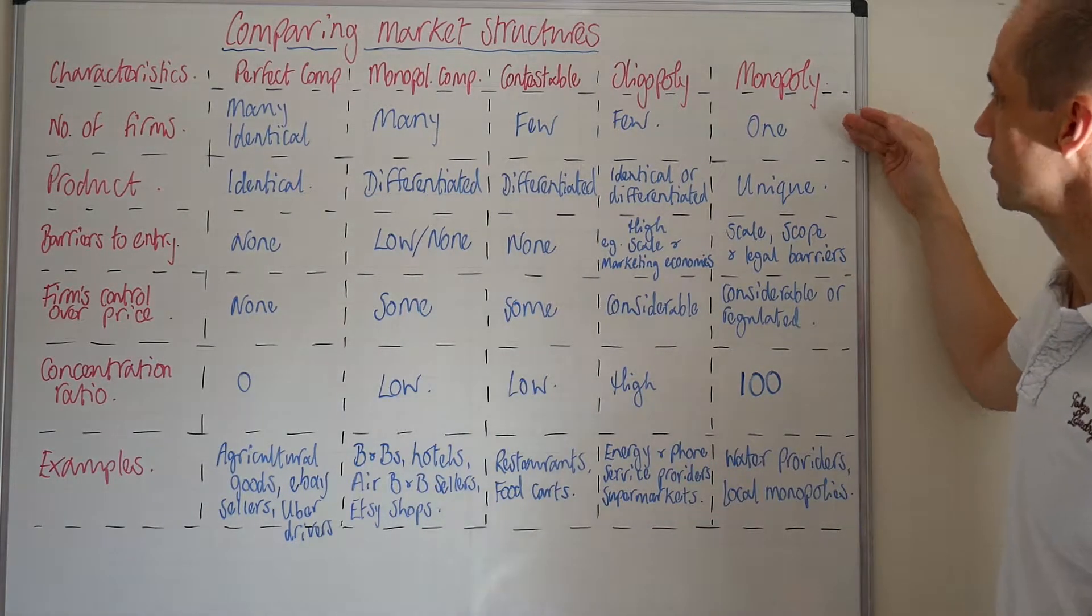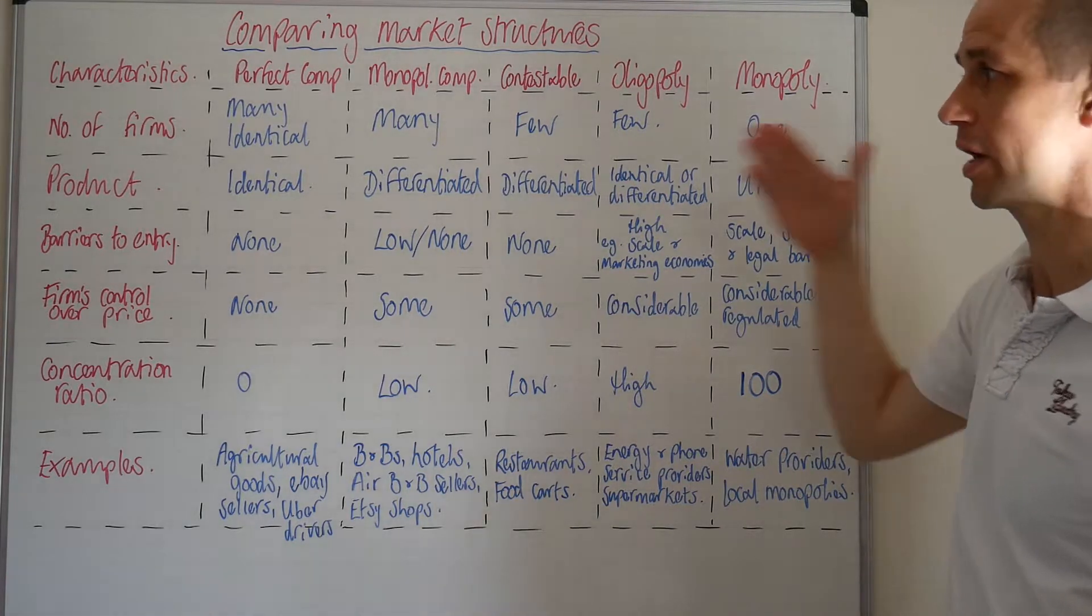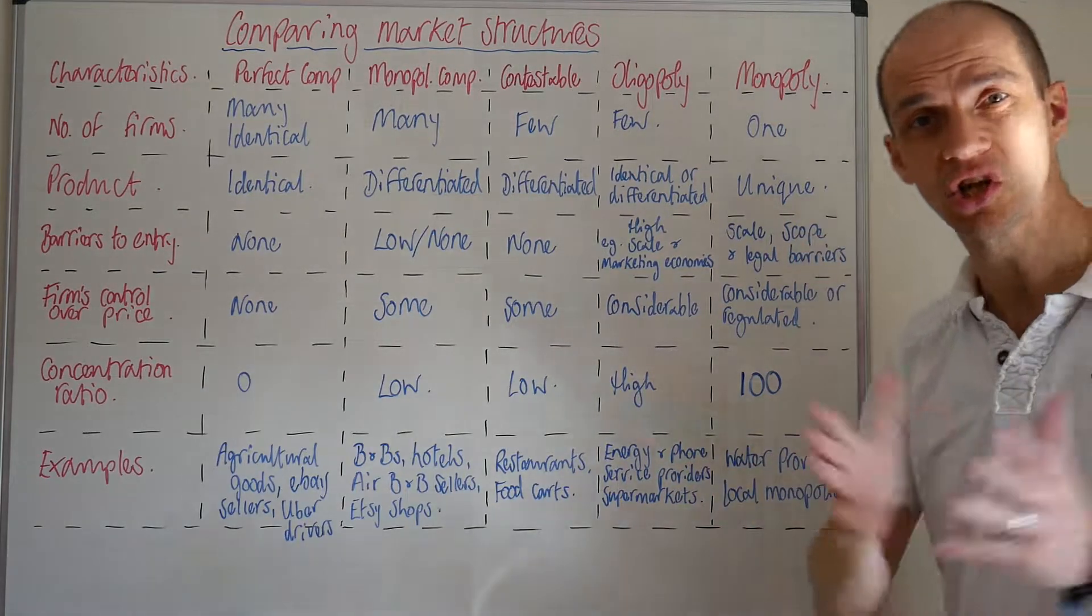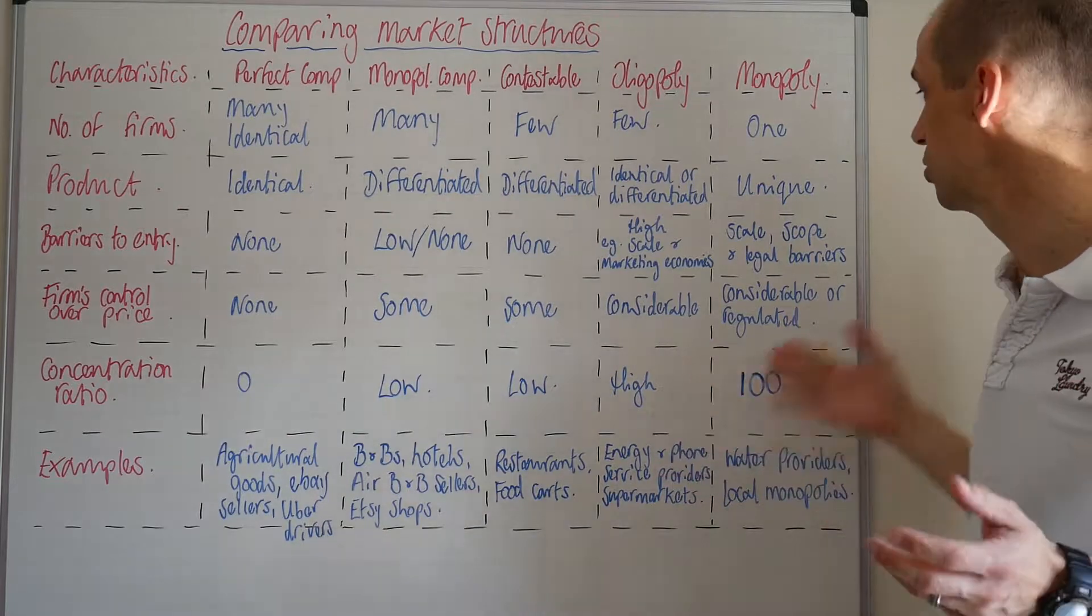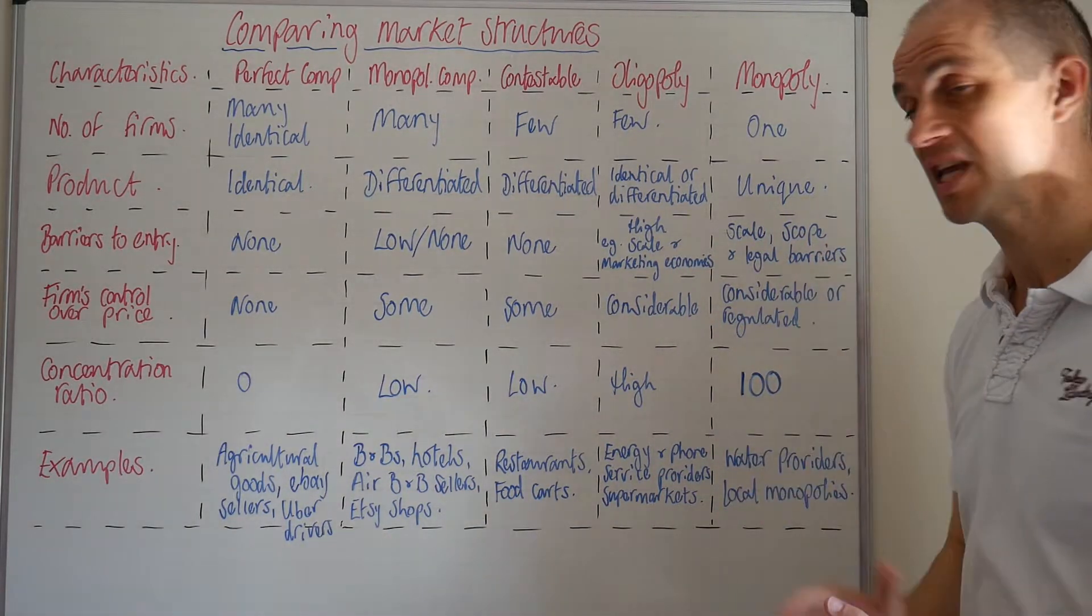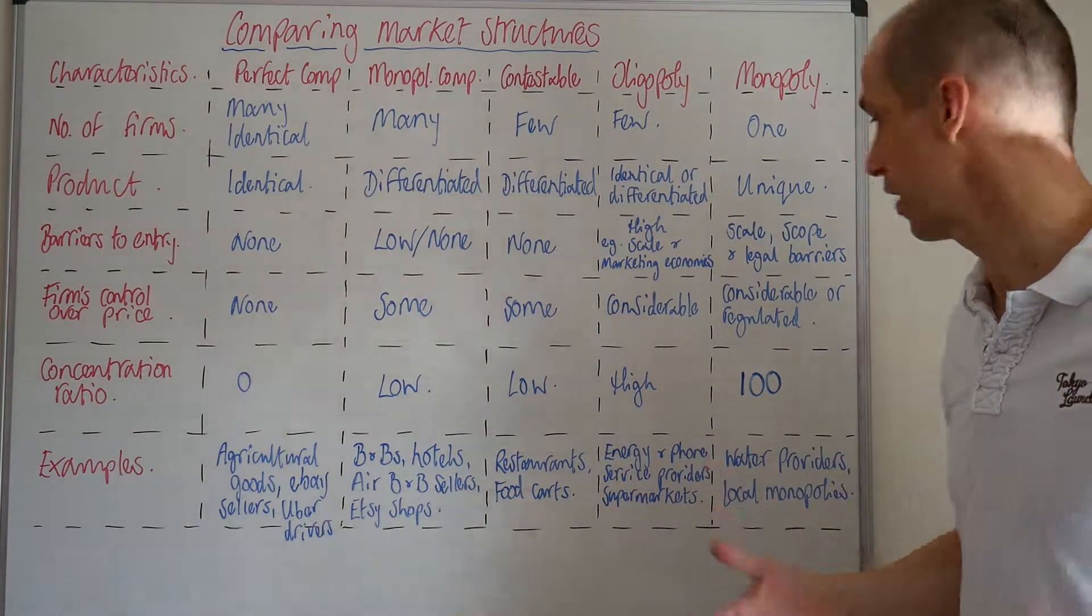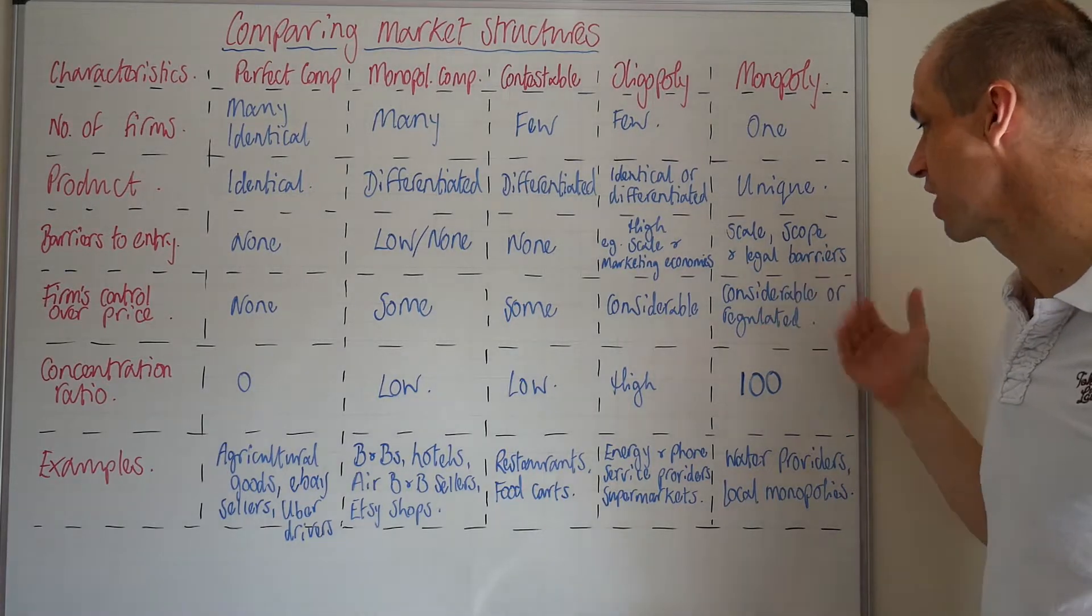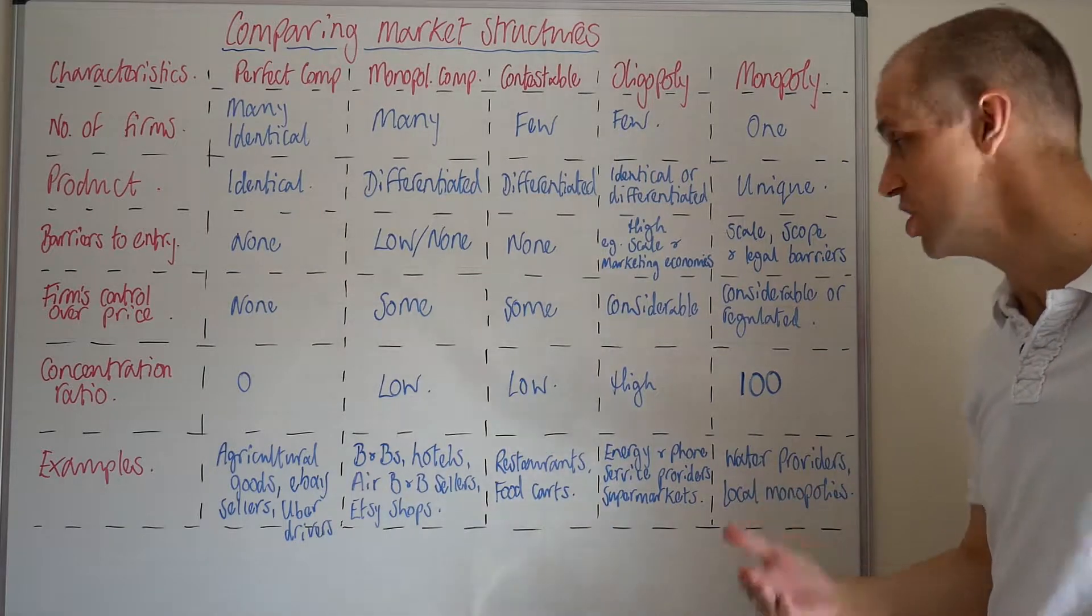What about monopolies? You've got one firm here, you've got a unique product. Barriers to entry—you've got the scale, the economies of scale. The scope of the actual market that they work to enables them to benefit from those same marketing economies of scale, as well as making sure that they have the best staff to actually develop the best product, theoretically. And there's legal barriers, perhaps in some circumstances, which may prevent new entrants.